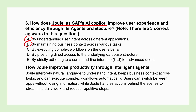The third function is where it gets really powerful: executing complex workflows — not just answering questions, but doing things. Joule can actually trigger multi-step actions on your behalf based on a single request. It might simultaneously update records in multiple systems, generate a complex analytical report, or initiate a purchase requisition that spans several different backend systems, automating entire sequences that used to take minutes of manual clicking and navigating.